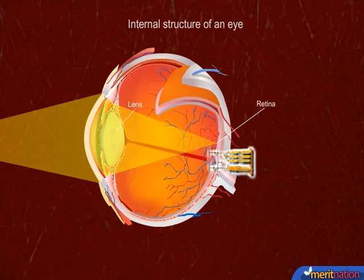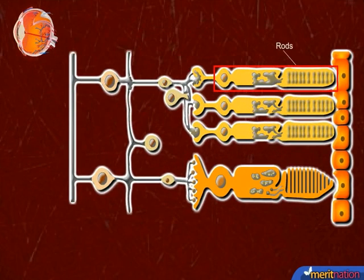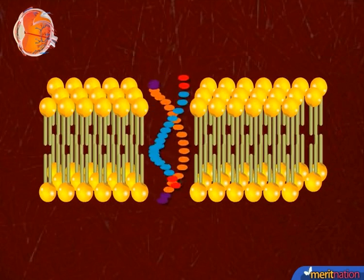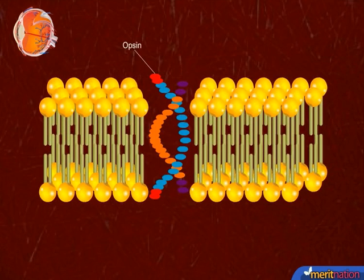The retina consists of two types of cells: rods and cones. Rods contain associated pigments known as opsin and retinal.